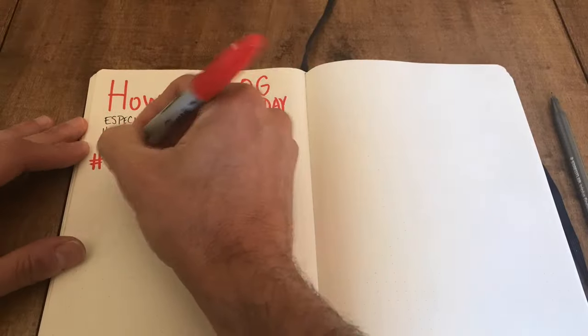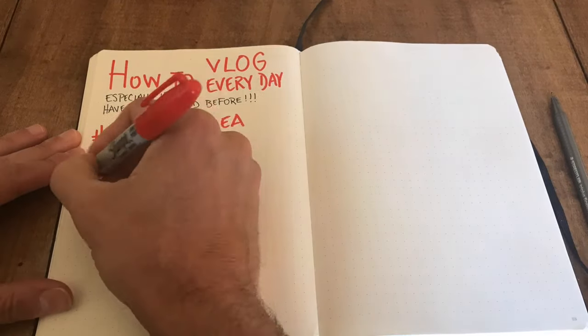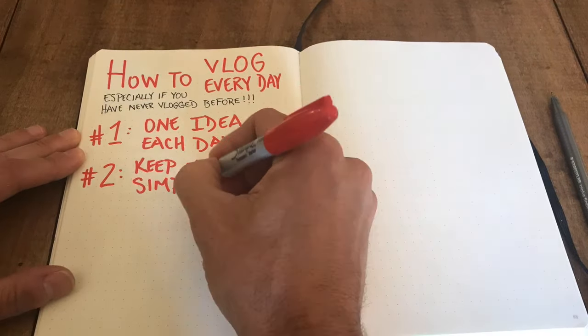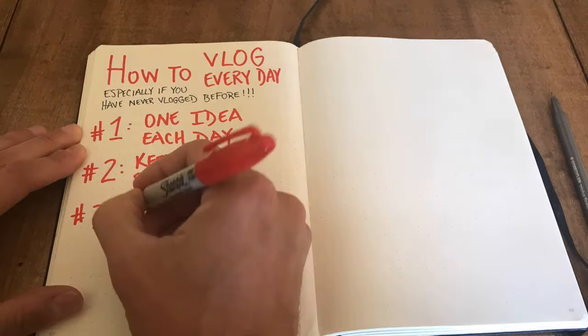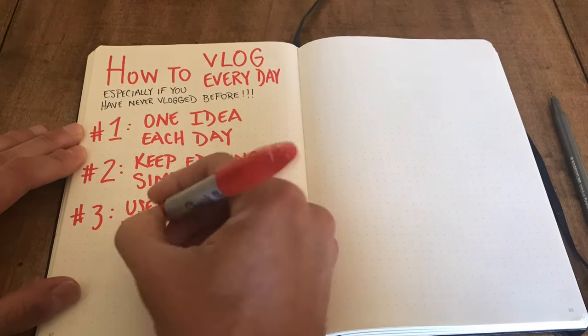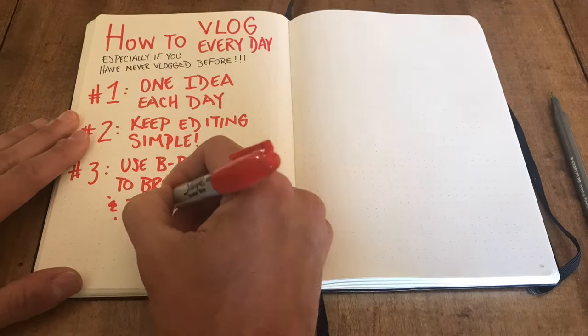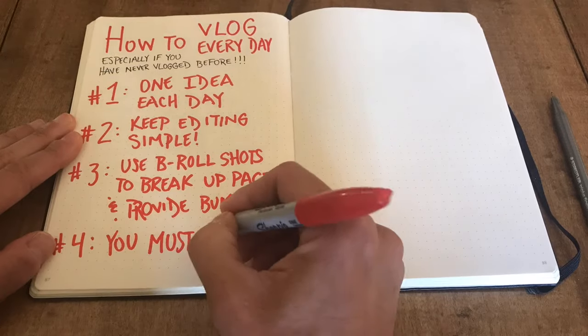Number one: one idea each day. Number two: keep your editing simple. Number three: use b-roll shots to provide a little flavor, a change of pace, and show a little more about your day. Number four: you must ship. Hope you've enjoyed this — make sure to subscribe, leave a comment, let me know how you keep the pace up and stay dedicated to vlogging every day in August. Take care and have a great weekend!